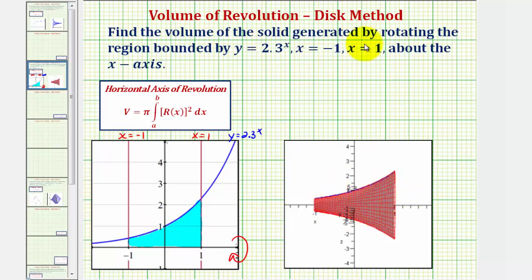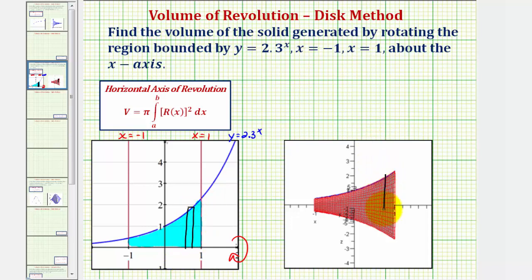When using the disk method or the washer method, it's helpful to sketch a representative rectangle. If we were to rotate the rectangle about the x-axis, it would give us one disk that would give us an approximate volume of one slice of the solid. For example, if we were to use this rectangle here and rotate it about the x-axis, it would give us this disk, which would give us the approximate volume of one slice of our solid.